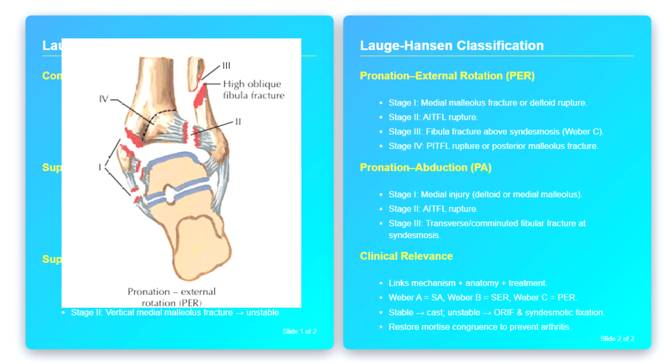In stage three, the fibula fractures obliquely, but importantly, the fracture occurs above the level of the syndesmosis. This is a Weber C fracture, high above the plafond reflecting disruption of the syndesmotic complex. And finally, in stage four, the posterior inferior tibiofibular ligament is torn or the posterior malleolus is fractured. Thus, the complete PER injury results in a trimalleolar fracture pattern with syndesmotic disruption.